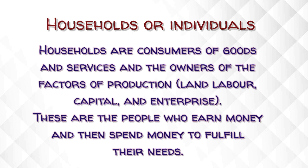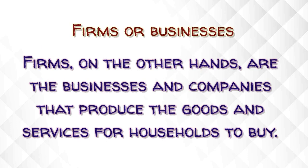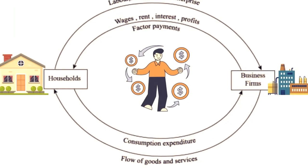Let us understand the terms households and firms. Households are consumers of goods and services and the owners of the factors of production, which are land, labour, capital and enterprise. These are the people who earn money and then spend money to fulfil their needs. Firms, on the other hand, are the businesses and companies that produce goods and services for households to buy.